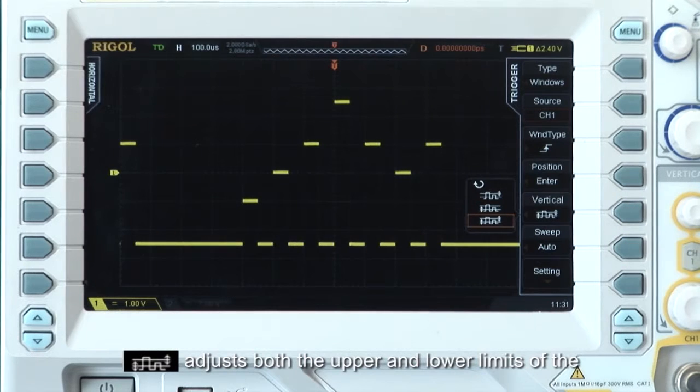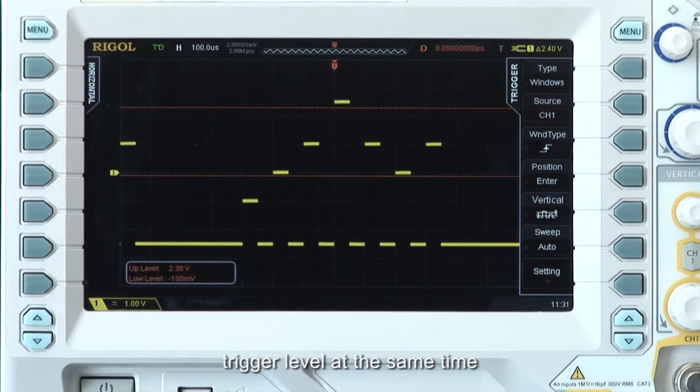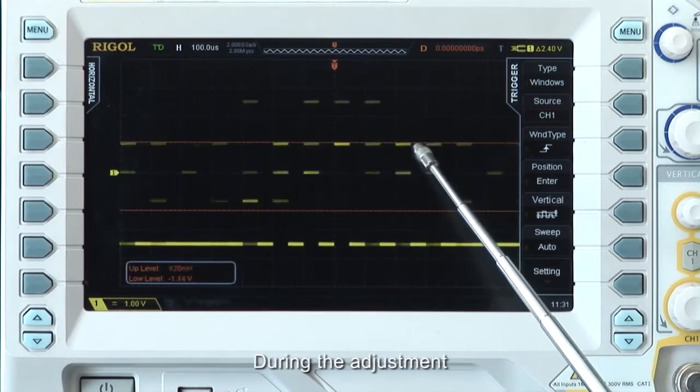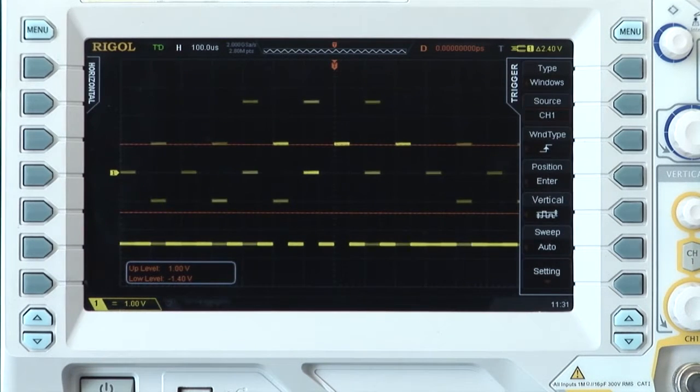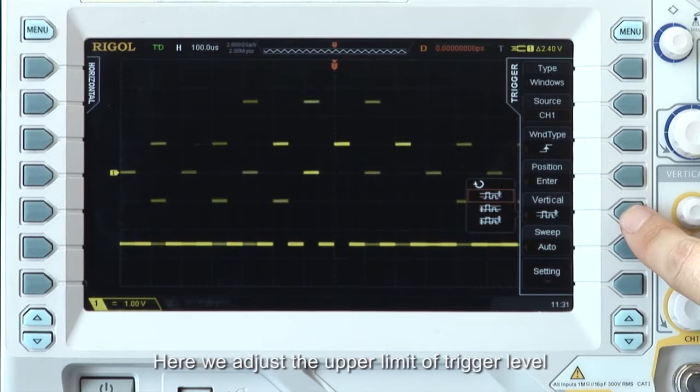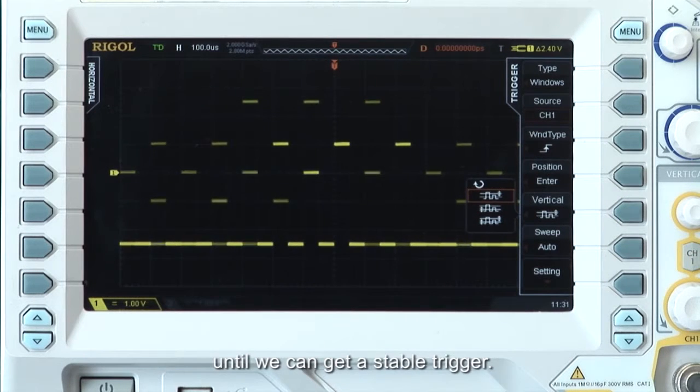Both adjusts both the upper and lower limits of the trigger level at the same time. During the adjustment, the upper level and lower level change accordingly. Here we adjust the upper limit of trigger levels until we can get a stable trigger.